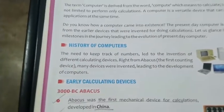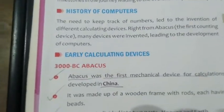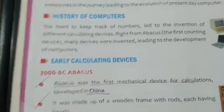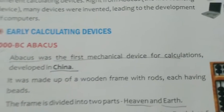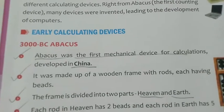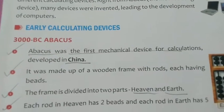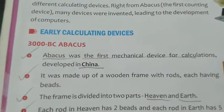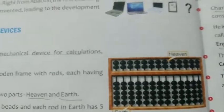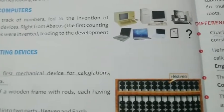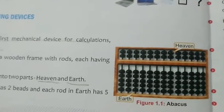Now we'll go back to the history of computers. The early calculating device is known as Abacus. Abacus was the first mechanical device for calculation, developed in China. It was made up of wooden frames with rods having beads, and it is divided into two parts: heaven and earth, and the drawing is given here. Nowadays in some sports shops, you find this Abacus, which is very helpful for calculation.